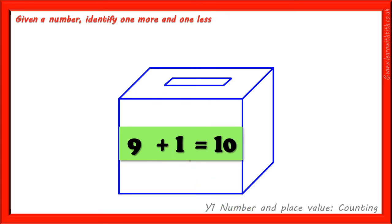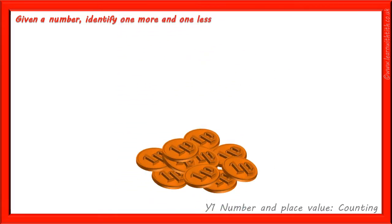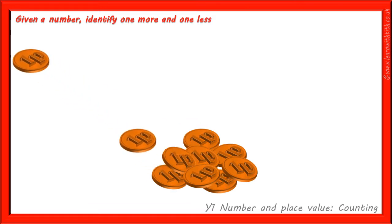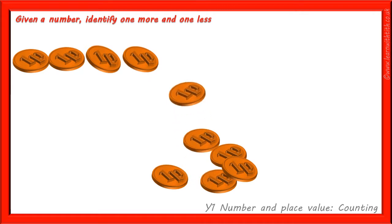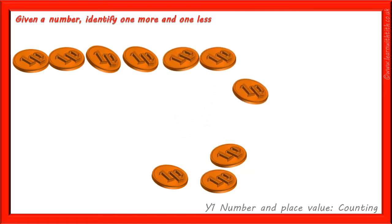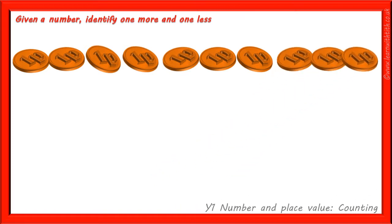So I now have 10 pennies in the money box. Let's just count them to make sure — we worked out that we should now have 10 pennies. So let's count them: 1, 2, 3, 4, 5, 6, 7, 8, 9, 10. Brilliant! There are 10 pennies.